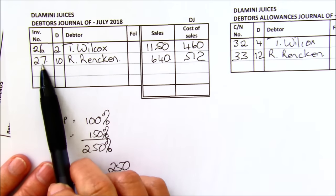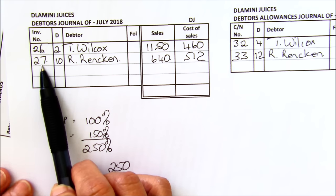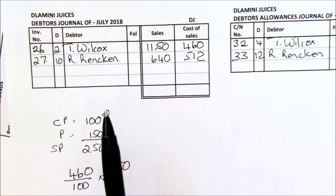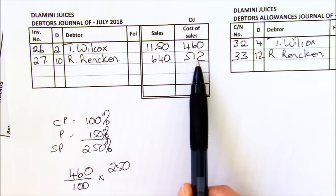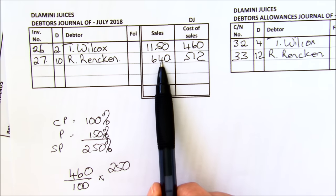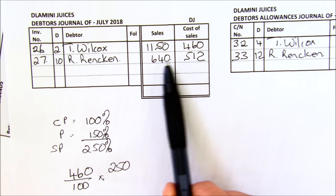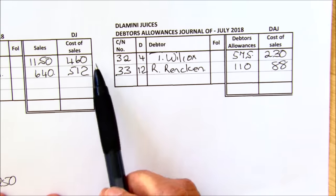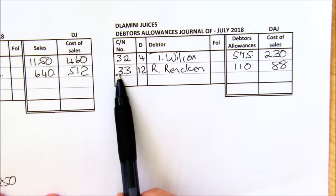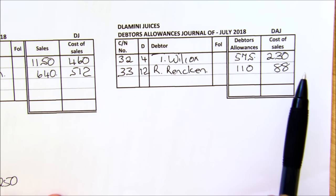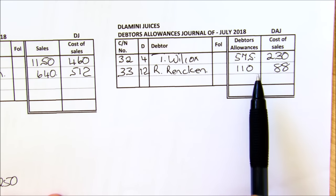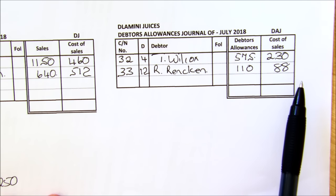On the 10th, we sold to Rankin. The invoices will run in order. They told you the goods were sold on account for $640 — so that's the selling price. The markup is 25%, so that's 125% and you're finding 100%. Always check yourself — the cost price must be lower. Then Rankin returns goods and we issue credit note number 30. The credit note gives the selling price with the same markup of 25%. If you're not getting these cost of sales figures correct, please go back to the video in which I revised sales and cost of sales.